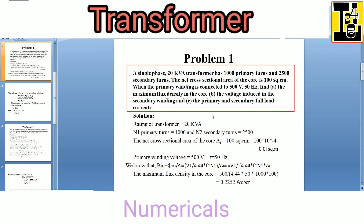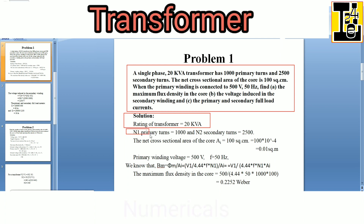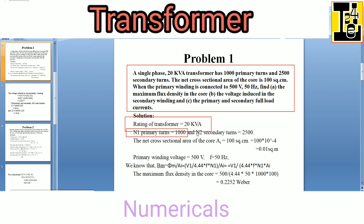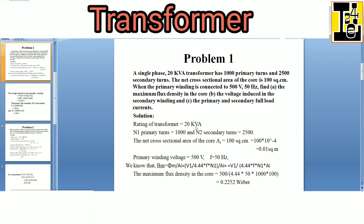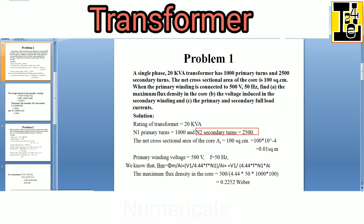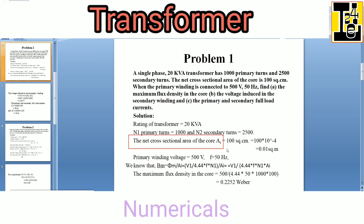Second, the voltage induced in the secondary winding. Third, the primary and secondary full load currents. Let us solve the problem. The rating of the transformer is 20 kVA. N1, the number of primary turns, is 1000. N2, the number of turns in the secondary, is 2500.